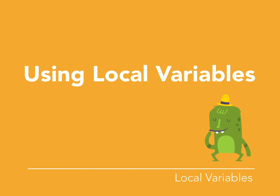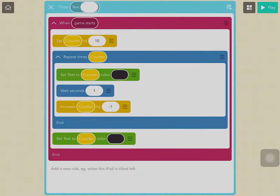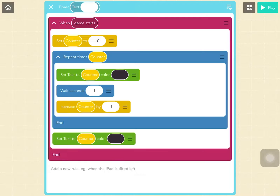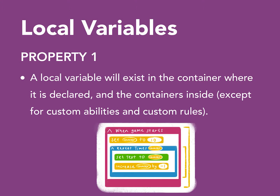Using local variables. I will first demonstrate local variables in this timer project. In this project, there is a simple text timer that will count down from 10. The counter variable is a local variable. Here is the first property of local variables: a local variable will exist for the container where it is declared and the containers that are inside, except for custom abilities and custom rules. This case will be explored later on.